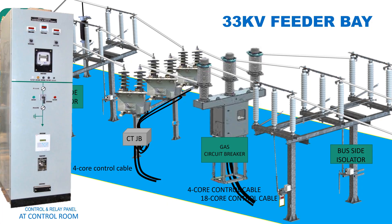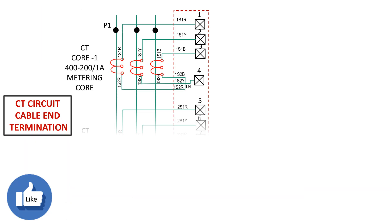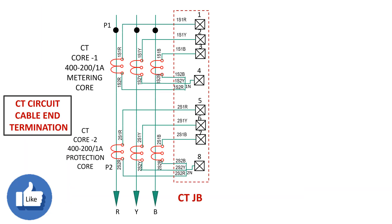There are many terminal blocks at the CT junction box, circuit breaker mechanism box, and at the control and relay panels. We have to make a termination schedule by which we can connect all these components with their respective terminal blocks by labelling the cable at both ends. First, check the drawing for both ends of the components to be connected. Suppose we are going to make a termination schedule between CT terminals and control and relay panel terminals for the same feeder.